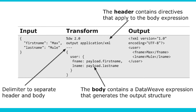The basic format of DataWeave looks like this. You get some input — in this case, for example, firstName: Max, lastName: Mule. The transform part is what you need to handle in your code, and the output is what is required by the next system. In this case, input is in JSON format and output needs to be in XML format. You will be writing this code inside your transform activity.